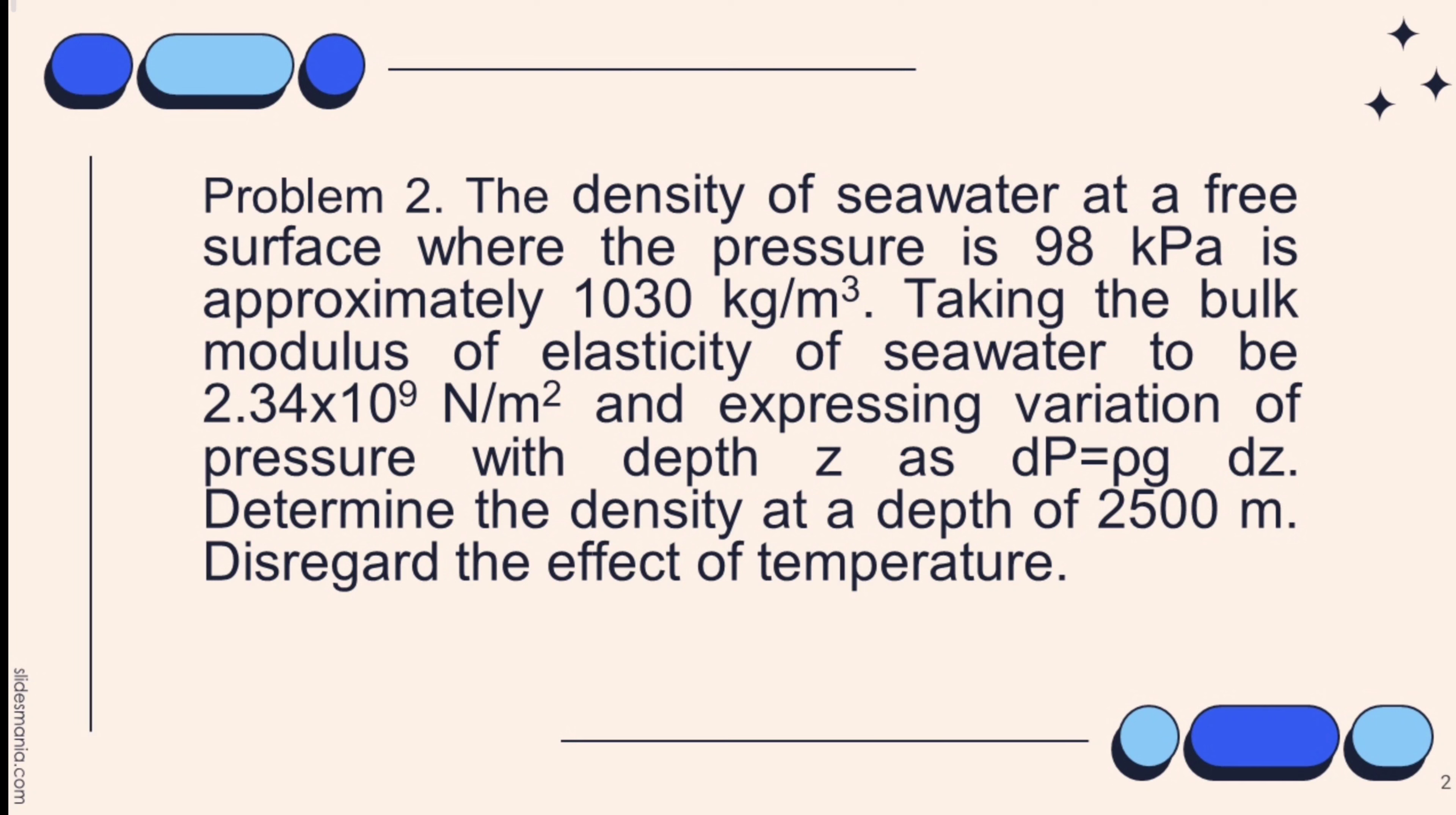Taking the bulk modulus of elasticity of seawater to be 2.34 times 10 raised to 9 newton over meter squared and expressing variation of pressure with depth z as dp equals rho g dz. Determine the density at a depth of 2,500 meters. Disregard the effect of temperature.